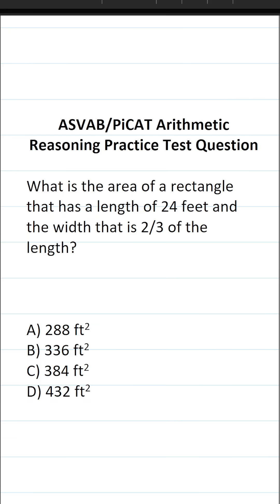This arithmetic reasoning practice test question for the ASVAB and PyCat says: what is the area of a rectangle that has a length of 24 feet and a width that is two-thirds of the length? On the ASVAB and PyCat, you're not given a reference sheet or a calculator, so in addition to memorizing these basic formulas from geometry, you also have to be able to perform these basic calculations by hand.